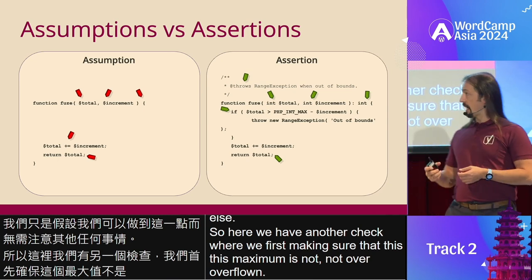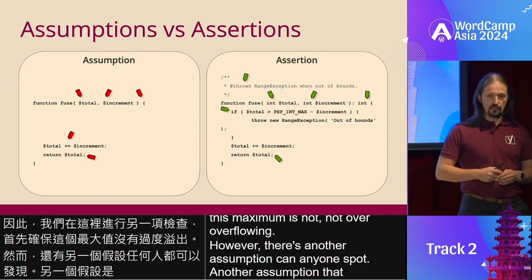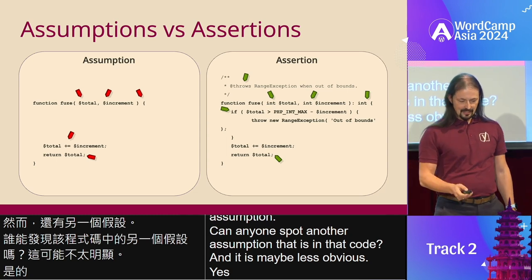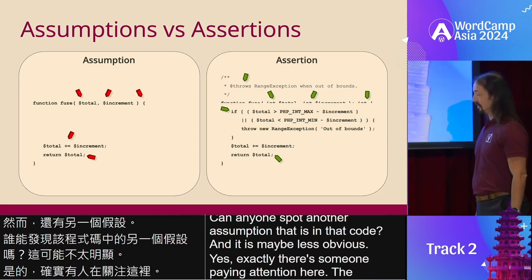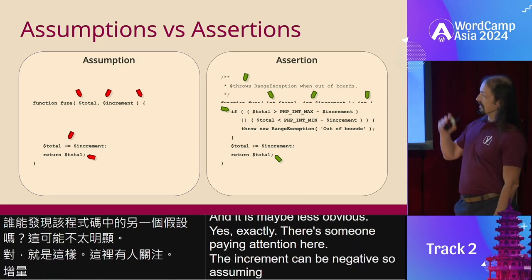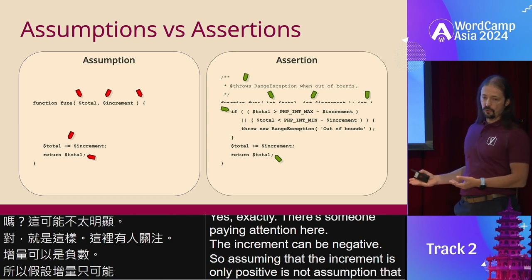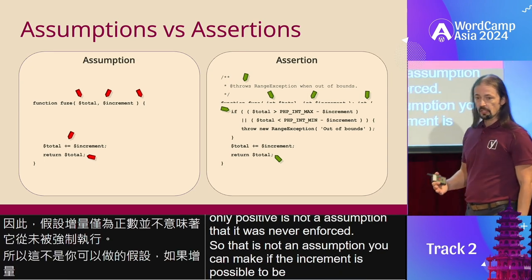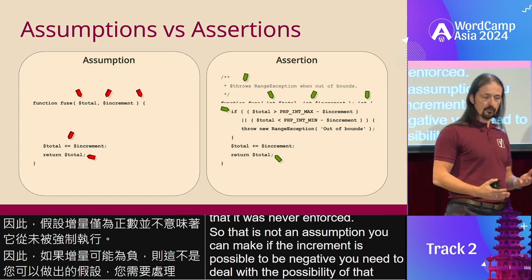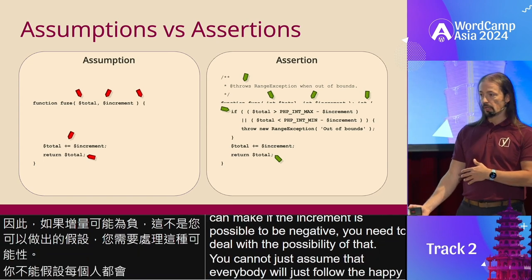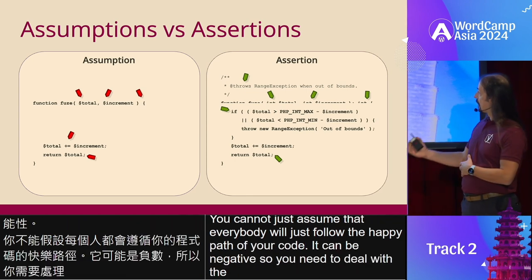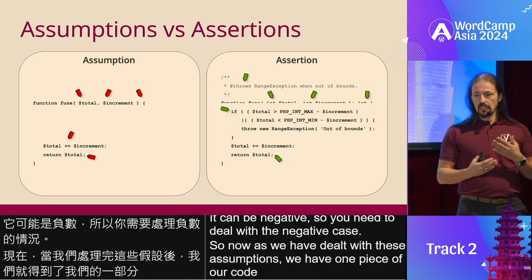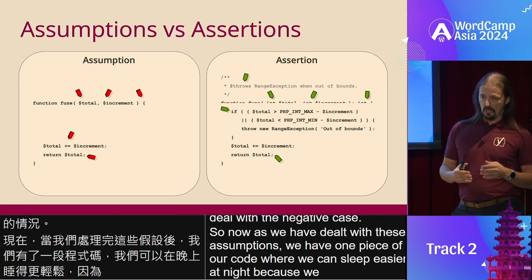However, there's another assumption. The increment can be negative. Assuming that the increment is only positive is not an assumption that was ever enforced. If the increment is possible to be negative, you need to deal with that possibility. You cannot just assume that everybody will follow the happy path of your code. It can be negative, so you need to deal with the negative case. Now, as we have dealt with these assumptions, we have one piece of our code where we can sleep easier at night, because we know that when there's a problem, it's probably not in that part of the code. We've really hardened it.